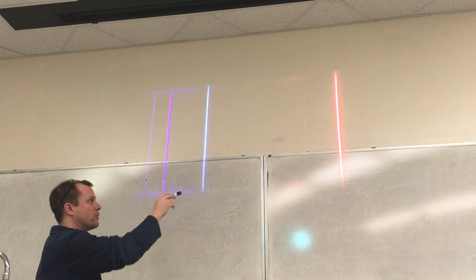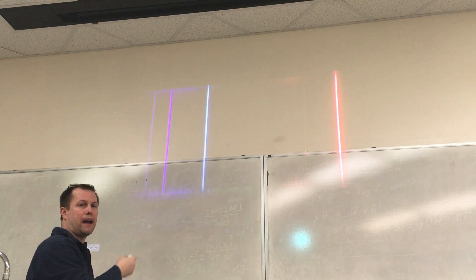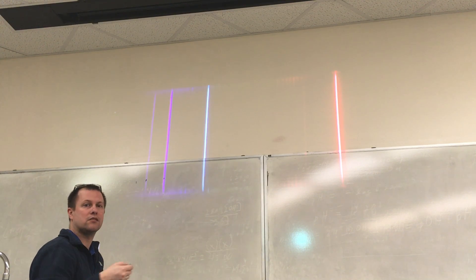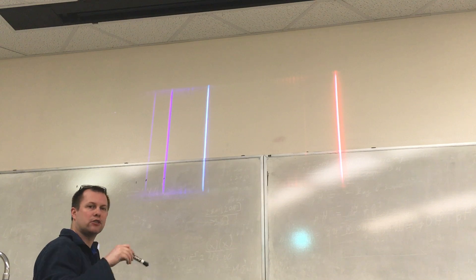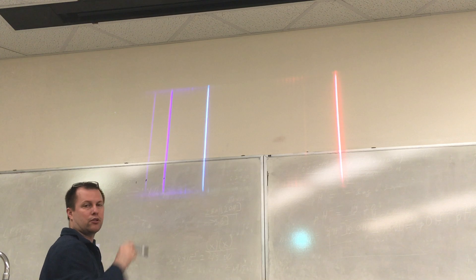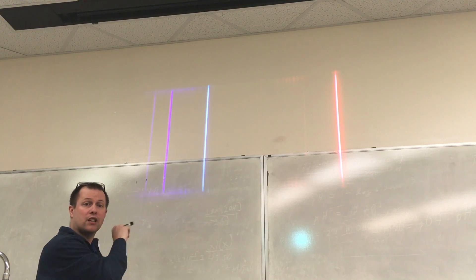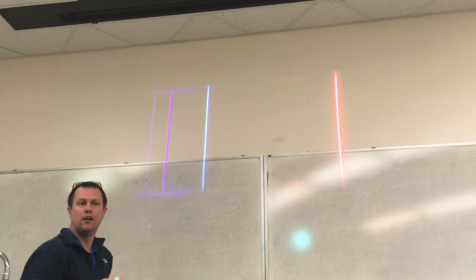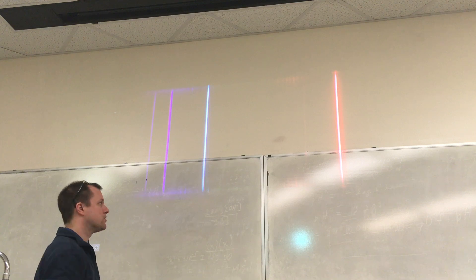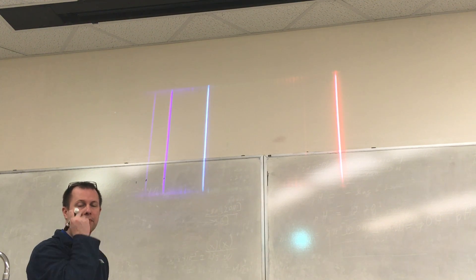And we can correlate that back to the energy transitions, like what basically energy levels your electron has to move between for a hydrogen atom to get these particular lines to show up, for these particular photons or colors of light to be emitted from those hydrogen atoms. So that's the gist of how things work for this particular experiment.